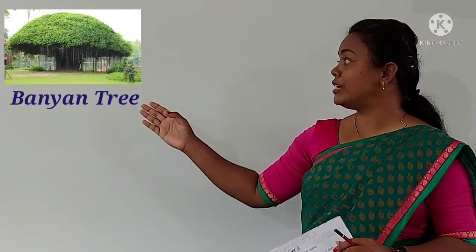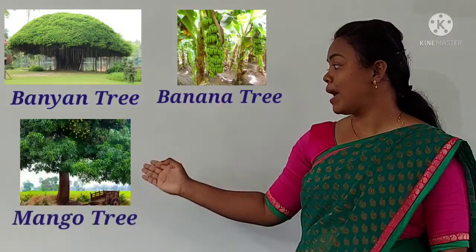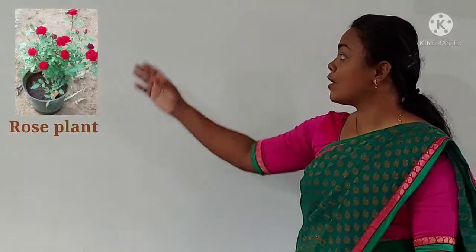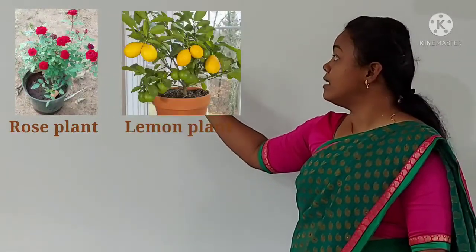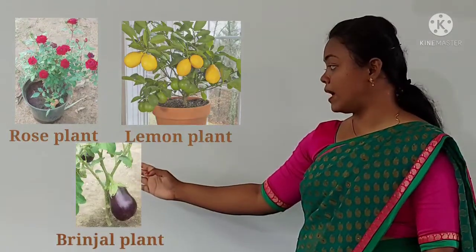For example, banana tree, mango tree. Some plants are small in shape and size. For example, rose plant, lemon plant, and grigel plant.